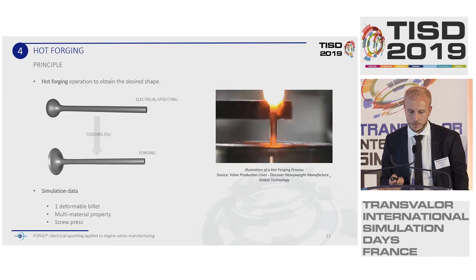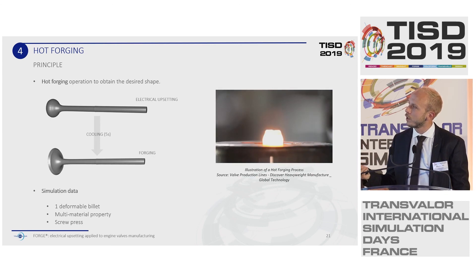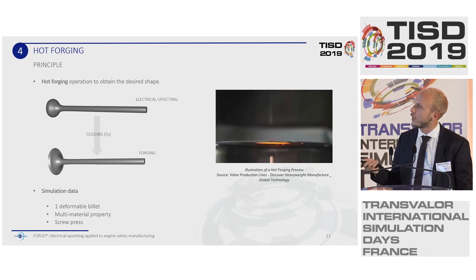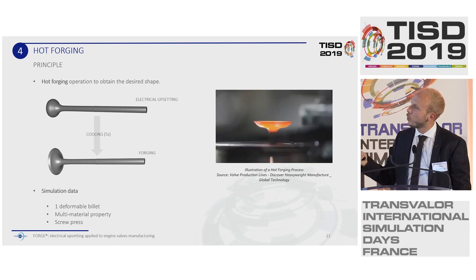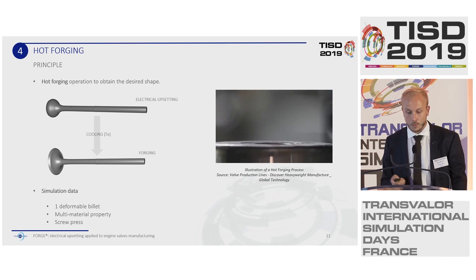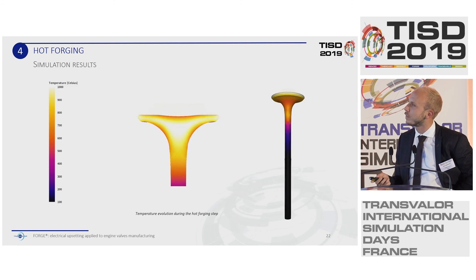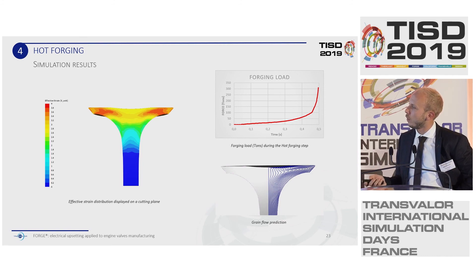The last operation is the hot forging step. The preform must be forged to get the final shape. A manipulator takes the part from the electrical upsetting and places it into the dies. Using a screw press, we forge the part to obtain the desired final shape of the valve. Here are illustrations of the temperature evolution, the material flow, the effective strain on the head, the forging load, and the grain flow prediction.